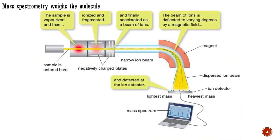Mass spectrometry is different from other forms of spectroscopy because it measures mass rather than the absorption of energy. It is not easy to weigh a neutral molecule, and a mass spectrometer works by measuring the mass of a charged ion instead. The charge makes the molecule controllable by an electric field. A mass spectrometer therefore has three basic components: something to volatilize and ionize the molecule into a beam of charged particles, something to focus the beam so that particles of the same mass-to-charge ratio are separated, and something to detect the particles.